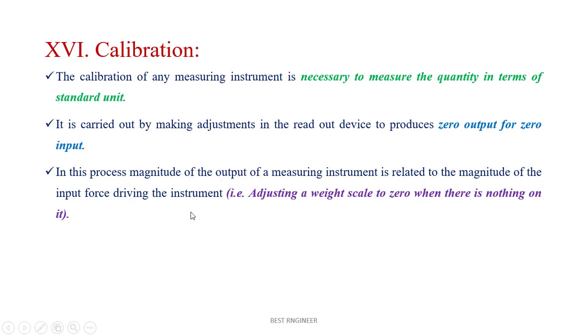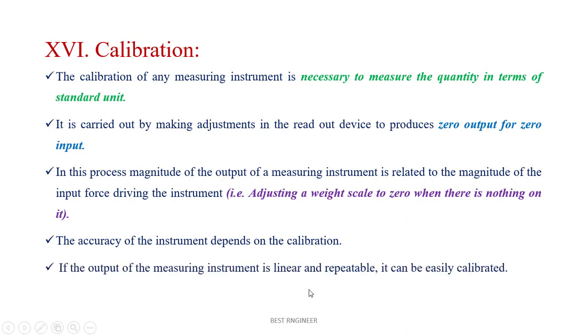For example, adjusting a weight scale to zero when there is nothing on it. The accuracy of instruments depends upon calibration. If the output of a measuring instrument is linear and repeatable, it can be easily calibrated. For example, a vernier caliper can be calibrated very easily.